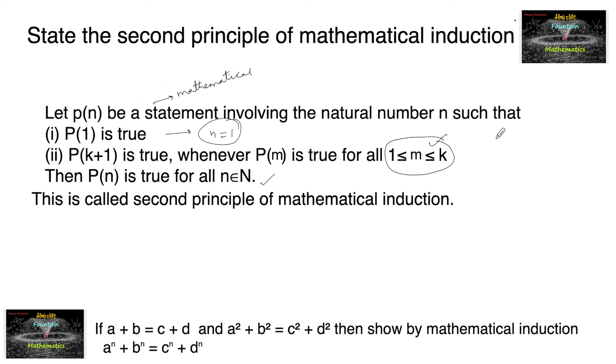Here k can be considered such that k is less than n. So for 1 ≤ m ≤ k, we have to prove that P(k+1) is true.